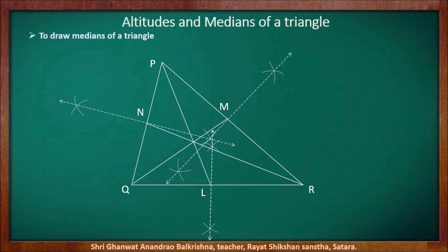What is your observation? Yes — all three medians of a triangle are concurrent, and G is the point of concurrence. Point G is called the centroid of the triangle. Remember that the point of concurrence of all three medians of a triangle is called the centroid. So point G is the centroid of triangle ABC.